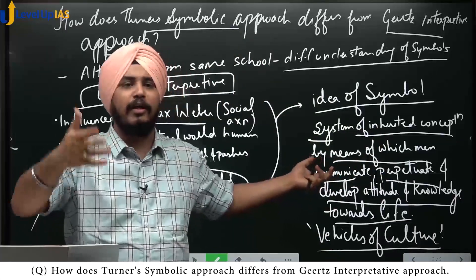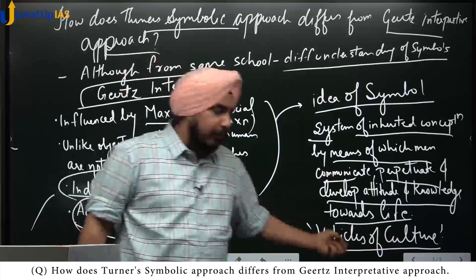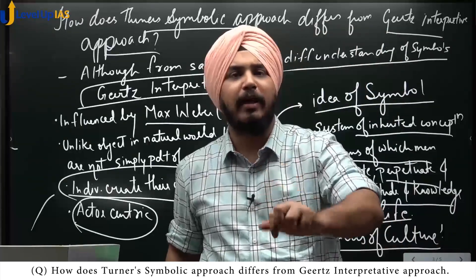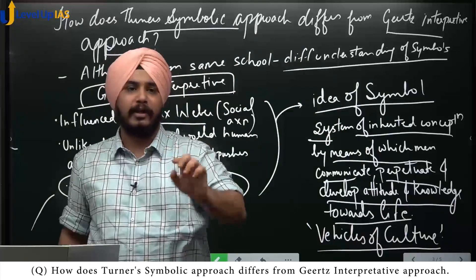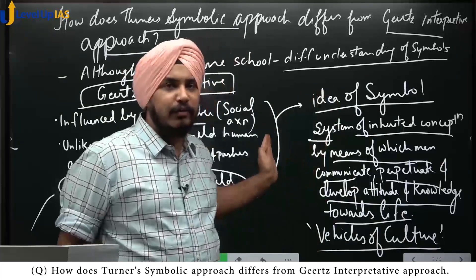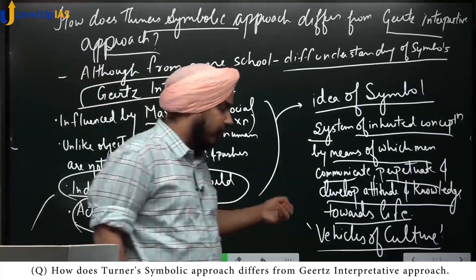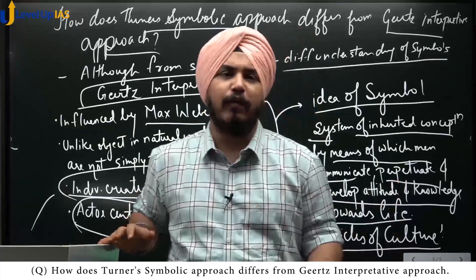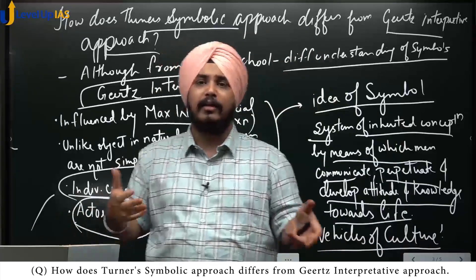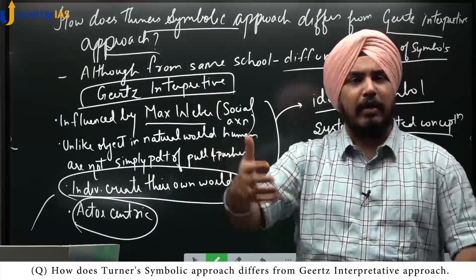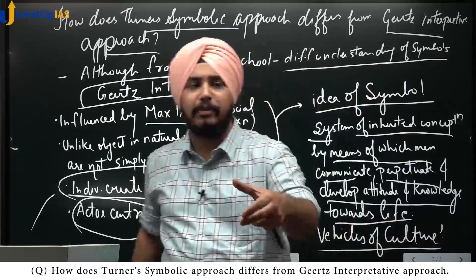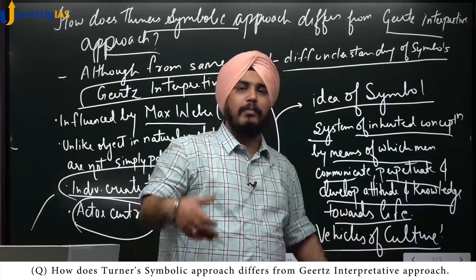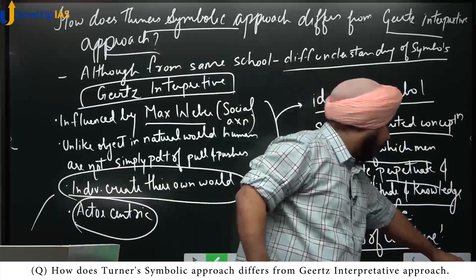These inherited conceptions have been different in different societies, so these symbols are the vehicles of culture — culture expresses itself through these symbols. Geertz uses this idea of symbols to understand various cultures by interpreting the meaning of their symbols, like the cockfight. The meaning of that symbol is understood from that society's own point of view — culture expresses itself through the symbol.